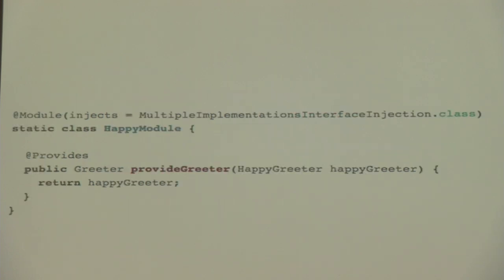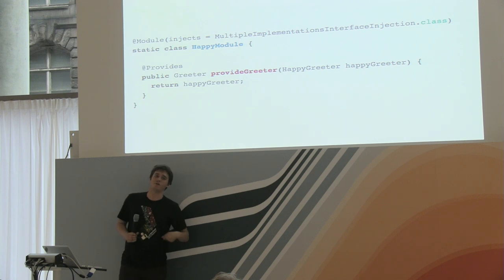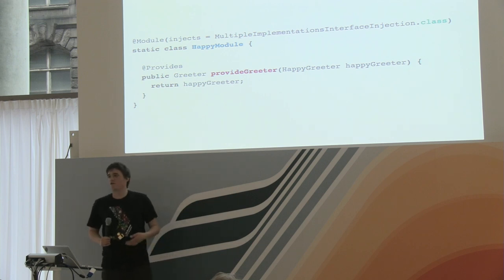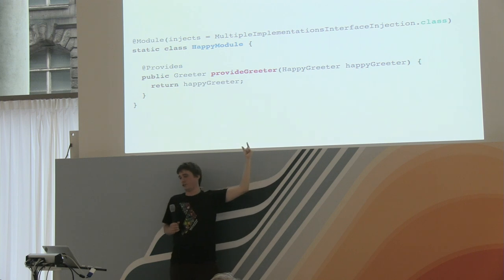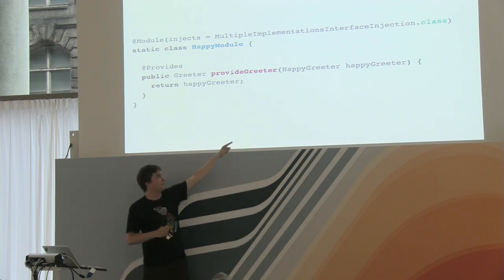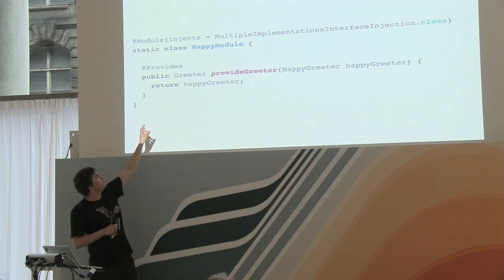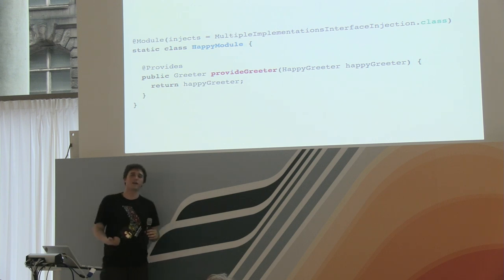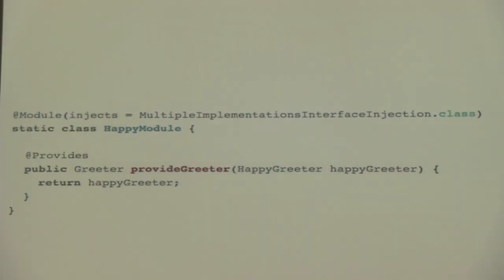If you have multiple implementations and some of those have non-empty constructors, you need to wire several dependencies to create the happy greeter. Dagger handles this fine — you can define the provider method with an argument of the concrete implementation, and Dagger will inject that concrete implementation into the provider. It's like injecting into the injector — we're going meta. Dependencies like Logger and HTTP inside the happy greeter are wired automatically.